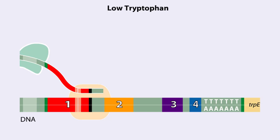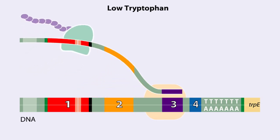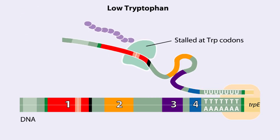When tryptophan is scarce, the ribosome stalls at the tryptophan codons. Therefore, region 2 is not covered when region 3 is transcribed, allowing regions 2 and 3 to form a hairpin that does not terminate transcription.